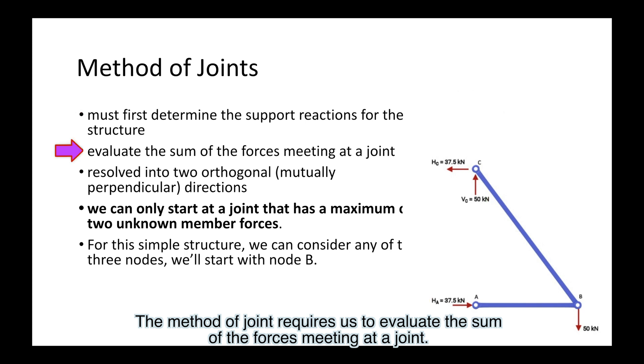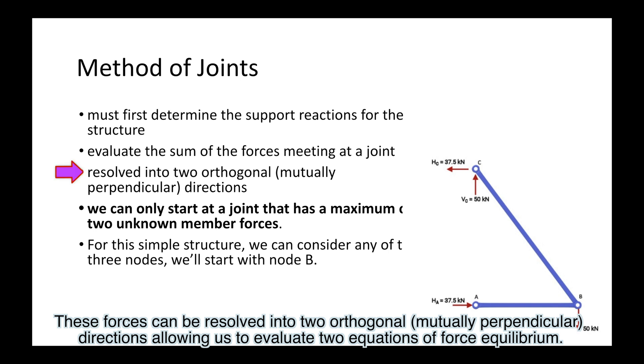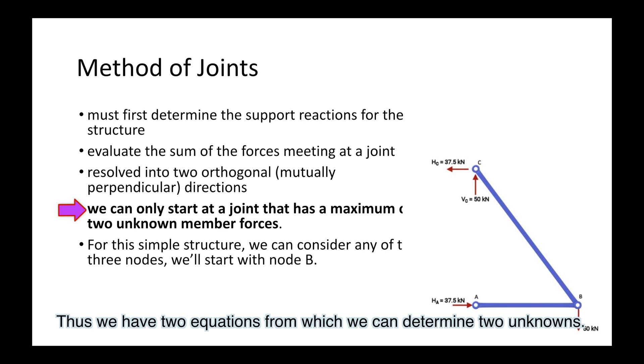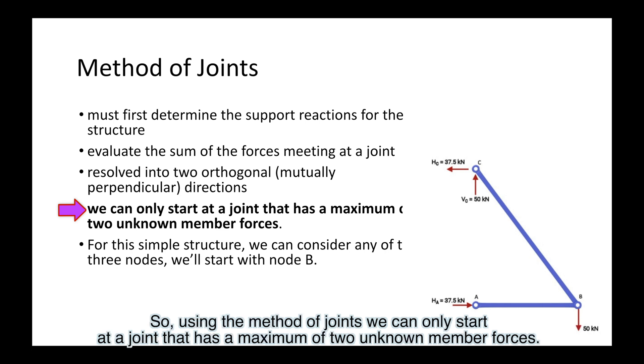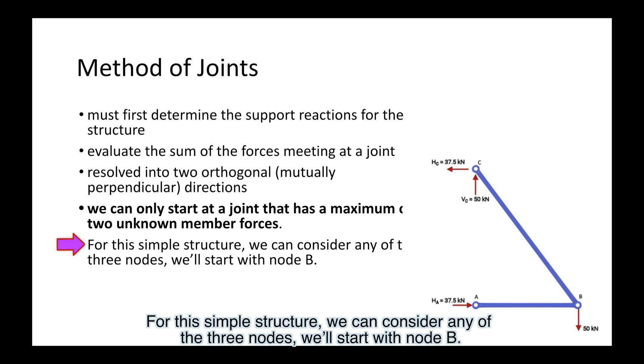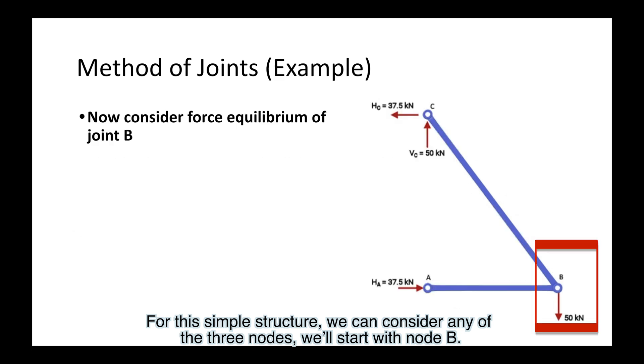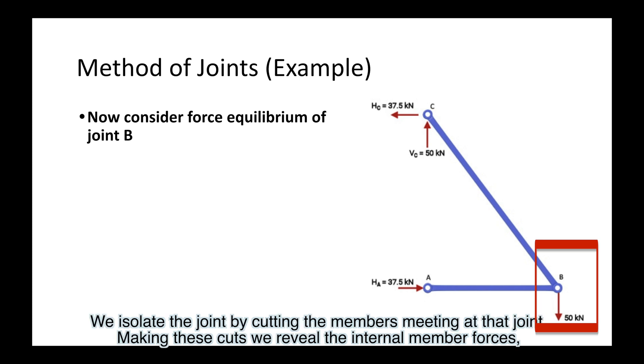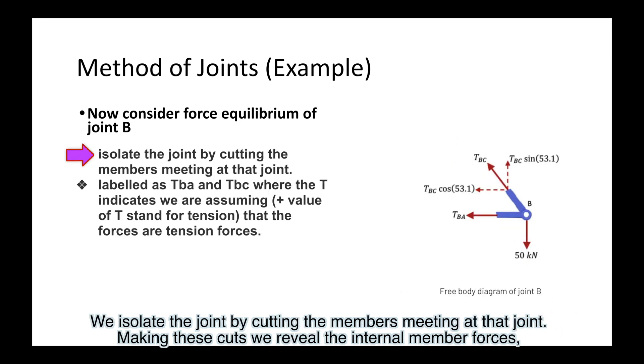Using the previous example, we have determined the joint reaction. The method of joints requires us to evaluate the sum of the forces meeting at a joint. These forces can be resolved into two orthogonal, which is mutually perpendicular, directions, allowing us to evaluate two equations of force equilibrium. Thus we have two equations from which we can determine two unknowns. So using the method of joints, we can only start at a joint that has a maximum of two unknown member forces. For this simple structure, we can consider any of the three nodes. We'll start with node B.